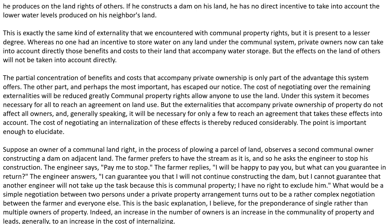Suppose an owner of communal land rights, in the process of plowing a parcel of land, observes a second communal owner constructing a dam on adjacent land. The farmer prefers to have the stream as it is, and so he asks the engineer to stop his construction. The engineer says, 'Pay me to stop.' The farmer replies, 'I will be happy to pay you, but what can you guarantee in return?' The engineer answers, 'I can guarantee you that I will not continue constructing the dam, but I cannot guarantee you that another engineer will not take up the task, because this is communal property — I have no right to exclude him.' What would be a simple negotiation between two persons under a private property arrangement turns out to be a rather complex negotiation between the farmer and everyone else. This is the basic explanation, I believe, for the preponderance of single rather than multiple owners of property.